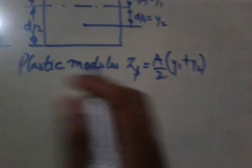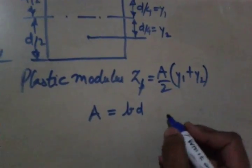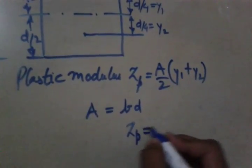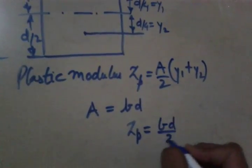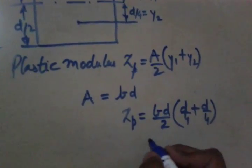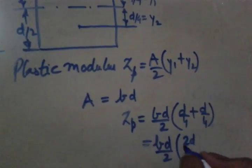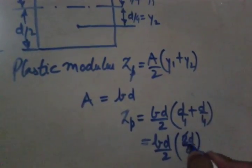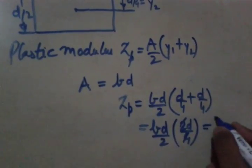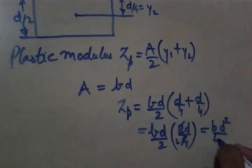So area as we know, the width is B and depth is D, so area will be B into D. So Zp will be equal to B into D divided by 2, and this is D by 4 plus D by 4. So this will be BD by 2, this will be 2D divided by 4, so we are left with BD square divided by 4.